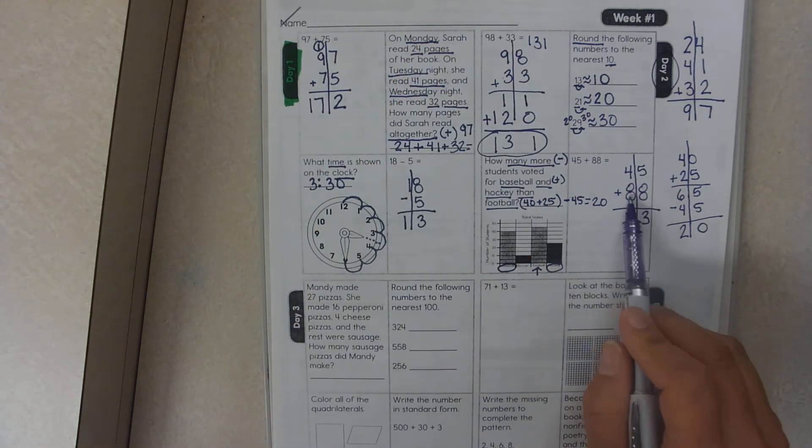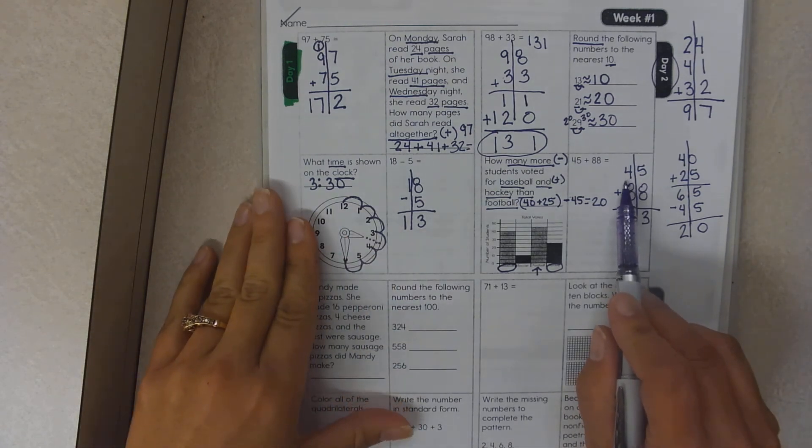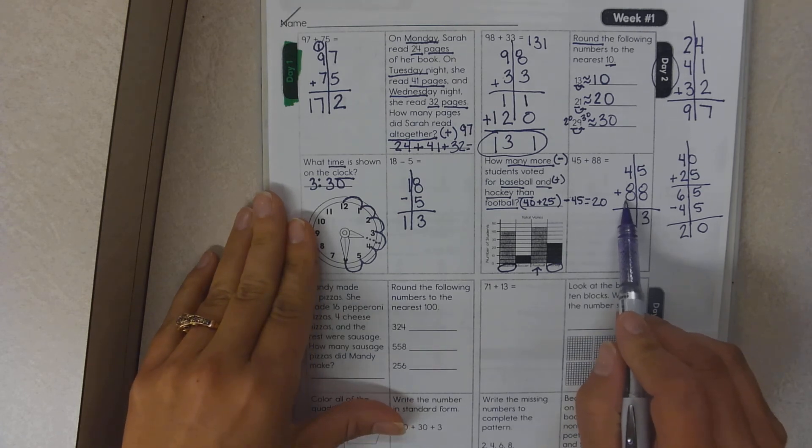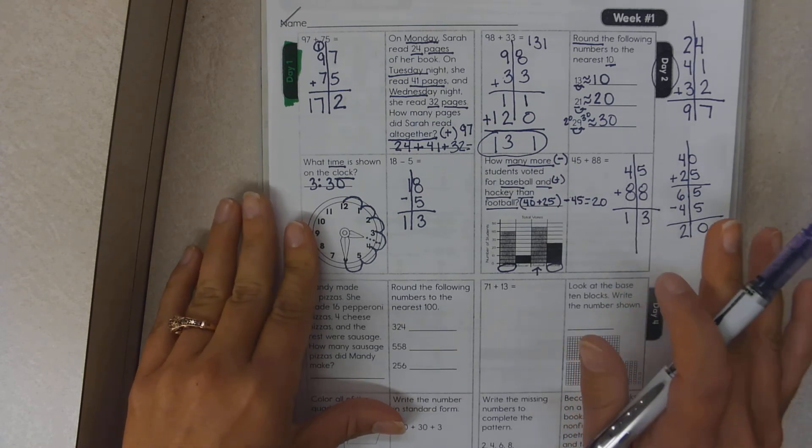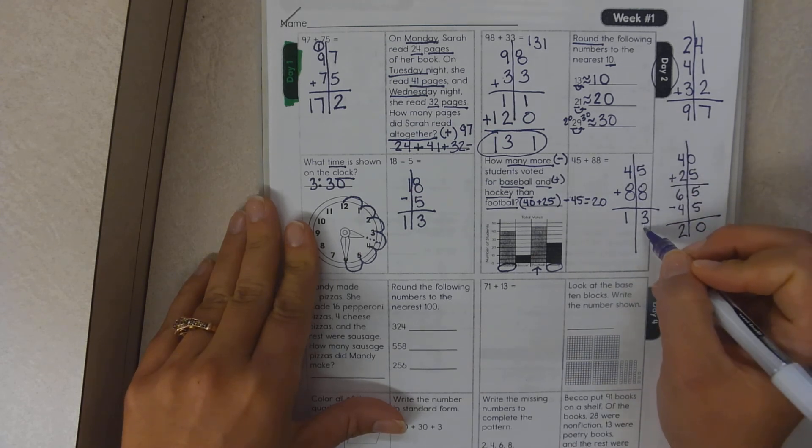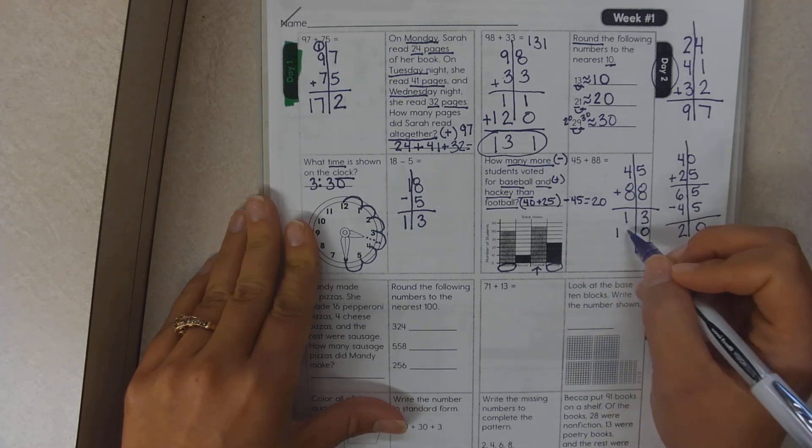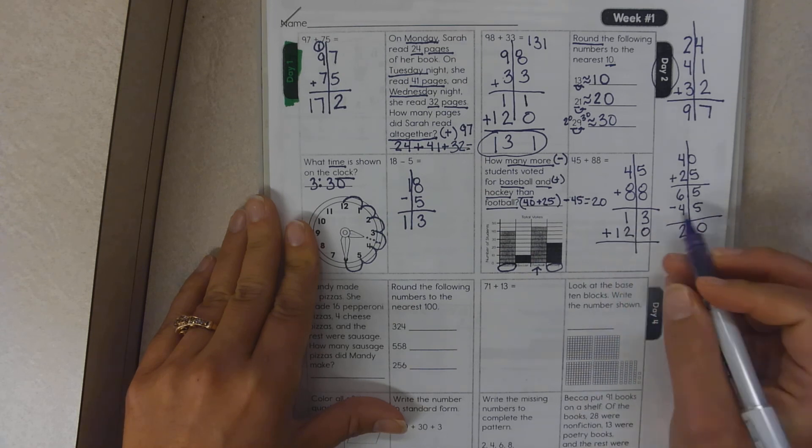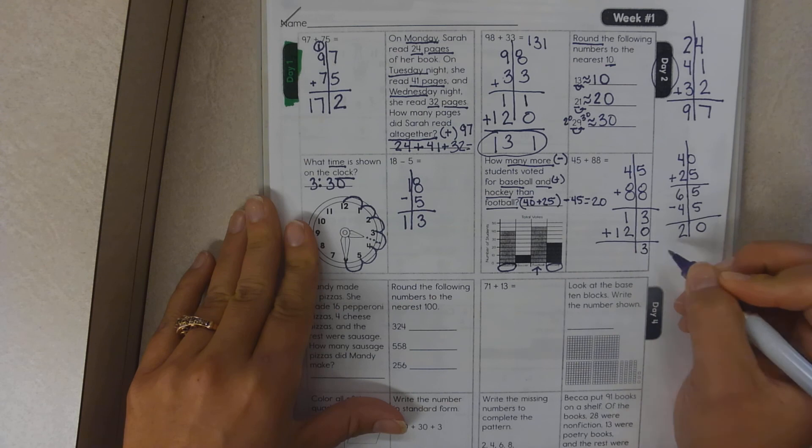Once again, this is not 4. This is 40. This is not 8. It is 80. So you're going to be adding 40 plus 80. And I know those numbers sound scary. But really, it's 4 plus 8. So 4 plus 8 is 12. And you add these ones, tens, and hundreds. 3 plus 0 is 3, 3, 1.